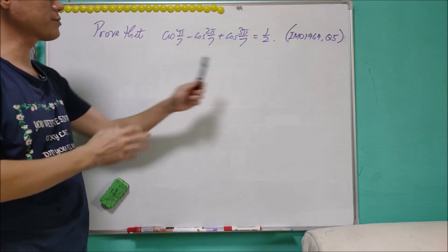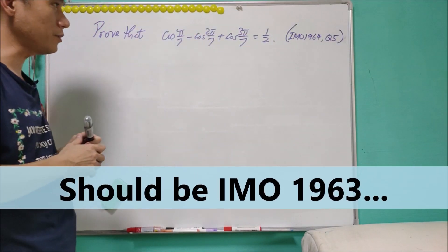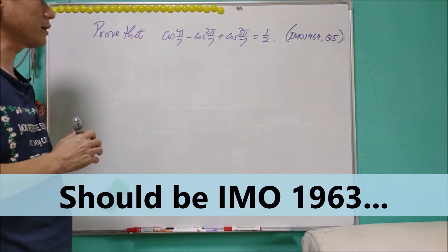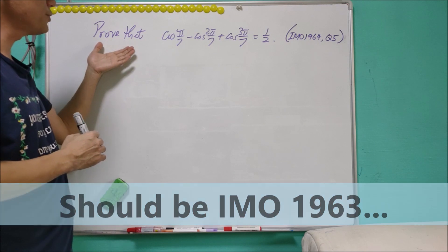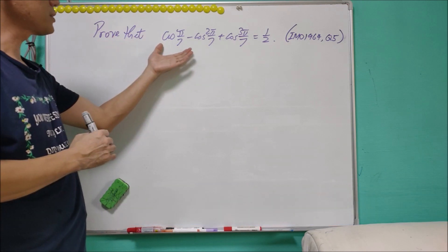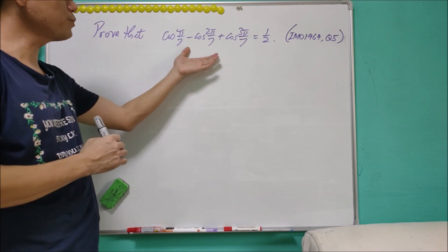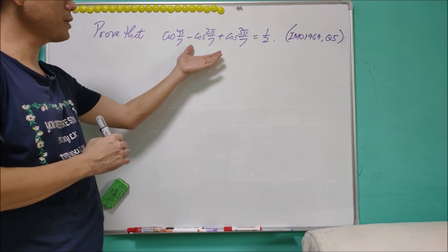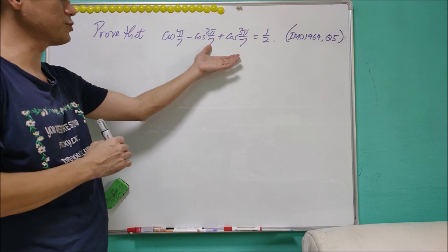This question is from IMO 1964, question 5. We are asked to prove that cos(π/7) minus cos(2π/7) plus cos(3π/7) equals one half.